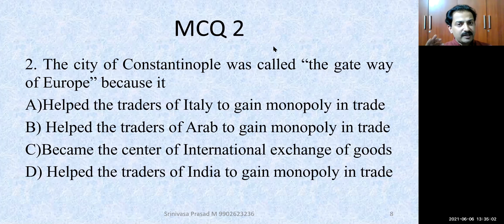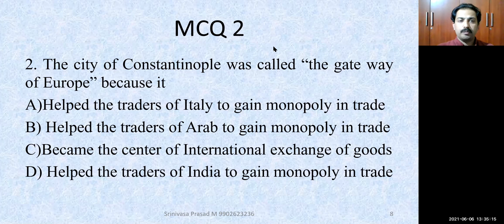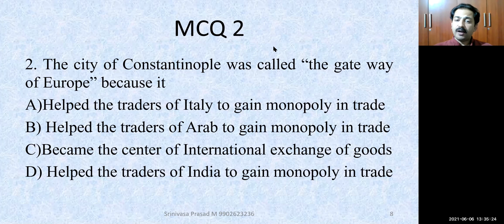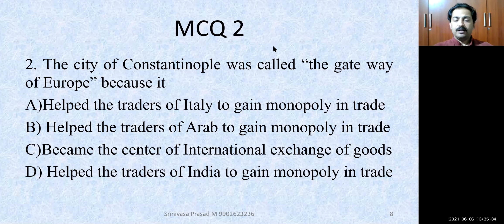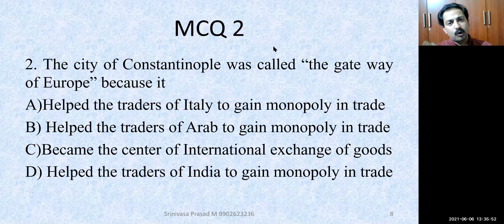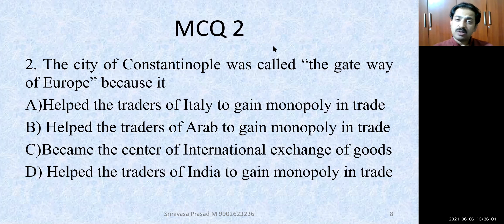Second question: The city of Constantinople was called the gateway of Europe because — option A: it helped the traders of Italy to gain monopoly in trade; option B: it helped the traders of Arab to gain monopoly in trade; option C: it became the center of international exchange of goods; option D: it helped the traders of India to gain monopoly in trade. The correct option is: it became the center of international exchange of goods. You need to have thorough knowledge of the lesson content. The examination is in July, so you still have time to refer to the textbook.